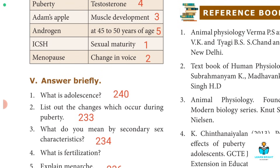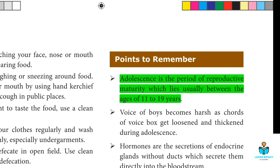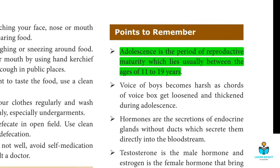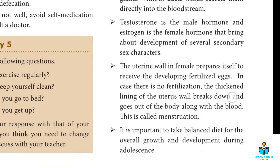Next: Answer briefly. First question: What is adolescence? The answer is on page number 240. Adolescence is a period of reproductive maturity which lies usually between the ages of 11 to 19 years.